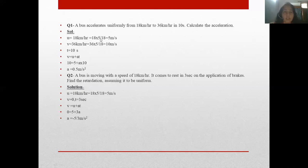18 km/h is the initial velocity, that is U. 36 km/h is the final velocity, that is V. Time is in seconds. You have to calculate acceleration. Out of these three equations, you have to calculate acceleration A. Out of the three equations, there is no S, so we will not use the last two equations. We will use the first equation, that is V = U + AT.